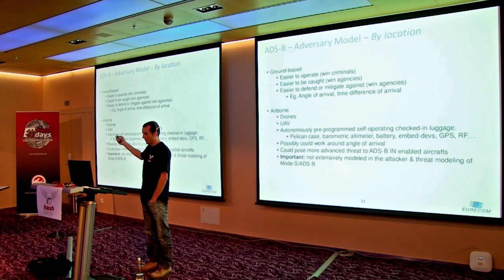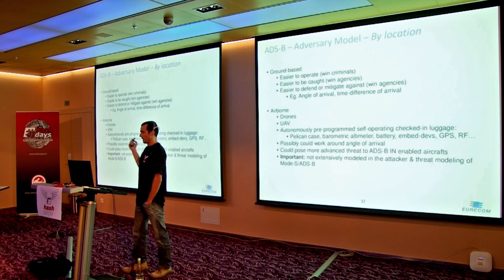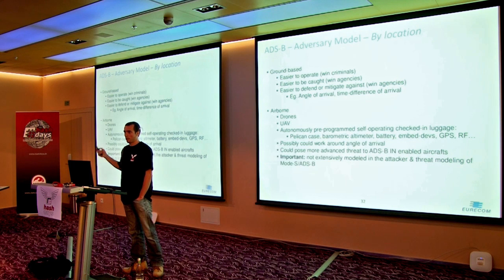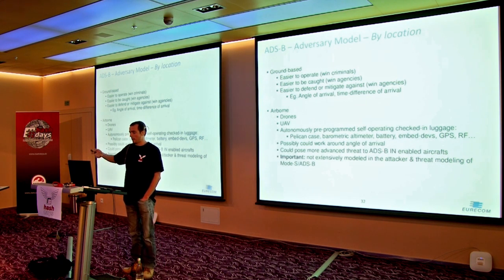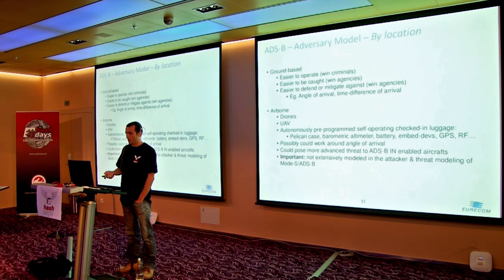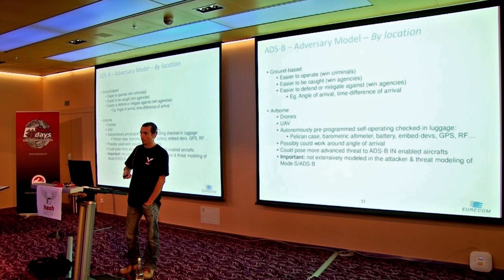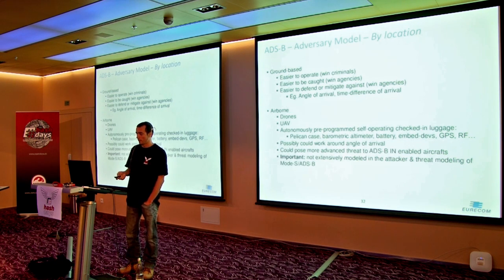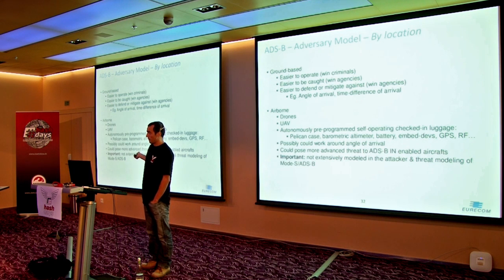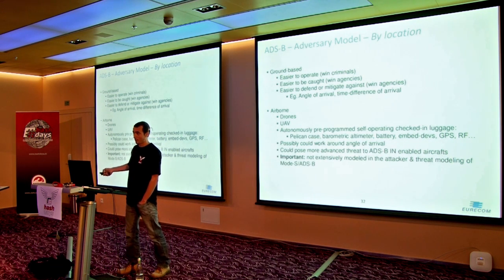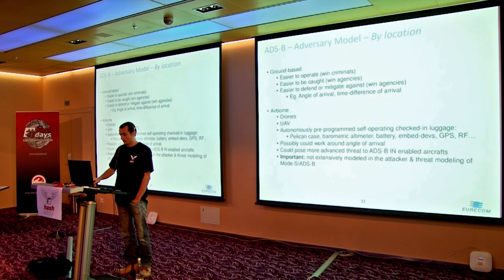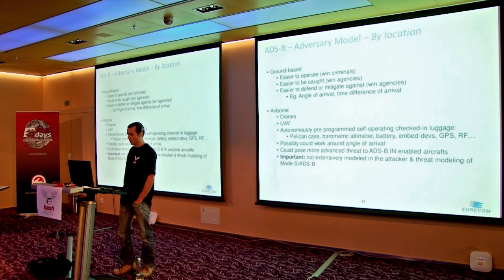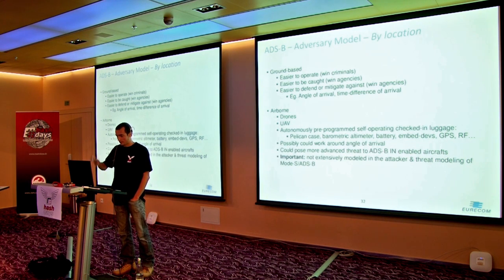By location, ground-based attacks mean you stay in your basement or van, hook up a power amplifier and transmitter, and start sending messages — because there's no crypto and everything is software-based nowadays. The problem with ground-based is you can quickly get triangulated or trilerated and caught. However, with new technologies — think about putting this kind of setup on home drones and UAVs — try to triangulate that. And all kinds of scenarios where you put everything with batteries in a Pelican case, check in your luggage, and go.